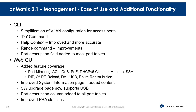There are lots of changes to the Web GUI. We've added more feature coverage — features not previously in the Web GUI now include port mirroring, ACL support, QoS support, PoE support, DHCPv6 client support, control for CN Maestro, and SSH. The new 2.1 features — RIP, OSPF, the reload feature, dynamic ARP inspection, USB support, and route redistribution — were also added to the Web GUI. We've improved the system information page, upgraded the software upgrade page to support upgrading images from USB, added the port description column to all port tables, and made enhancements to PBA statistics.